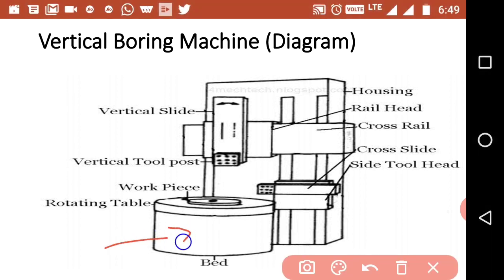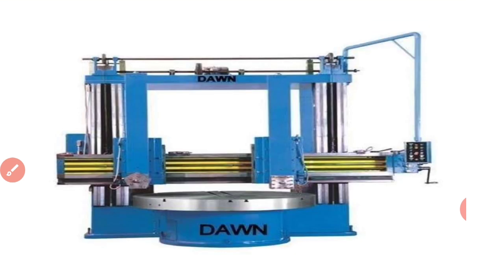In vertical boring machine, the bed is a circular casting. The table mounts on the bed. The housing consists of vertical members of the machine. The housing is connected with cross rail. The vertical slide can be moved back and forth on the cross rail. The side tool head holds the cutting tool.